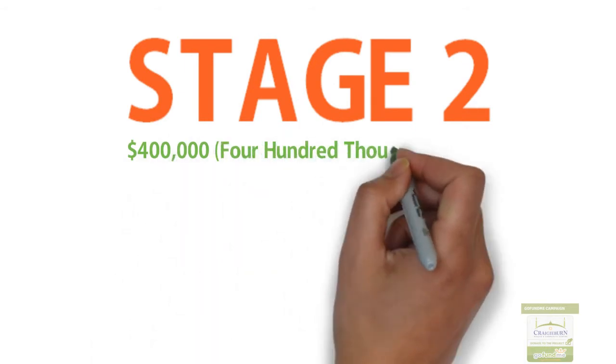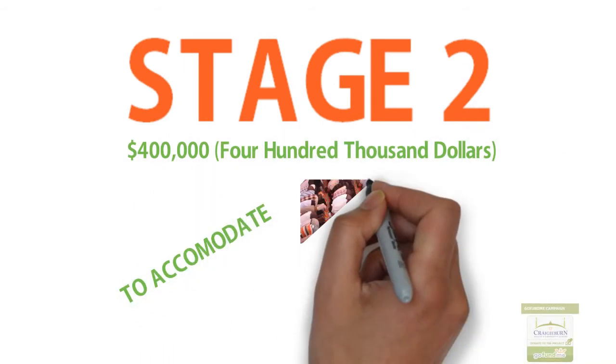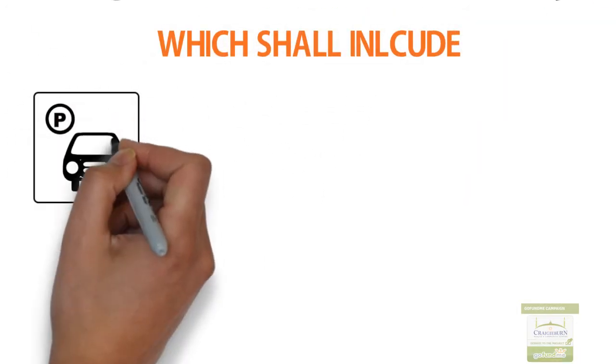In Stage 2, Phase 1 of construction requires $400,000 to accommodate more than 500 worshippers, which shall include car park and land cleaning,